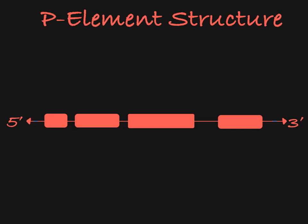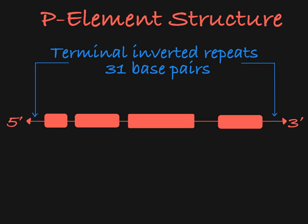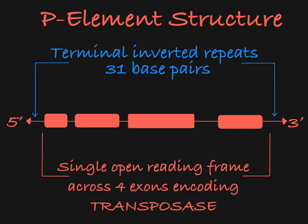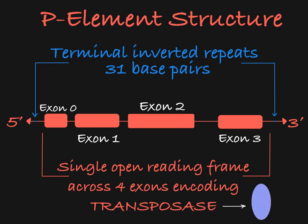A P element looks like a typical Class II transposon. It has 31 base pair terminal inverted repeats at both ends, and a single open reading frame across four exons that encodes the enzyme transposase.